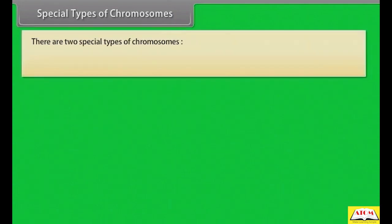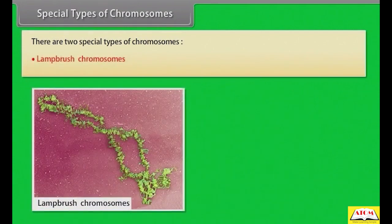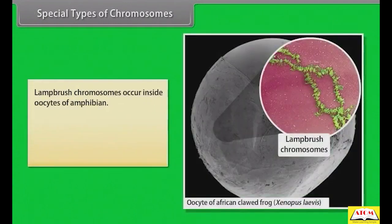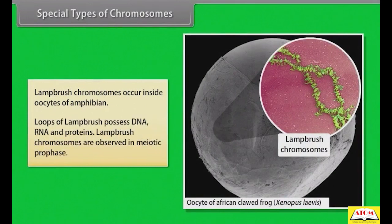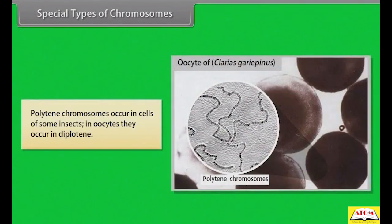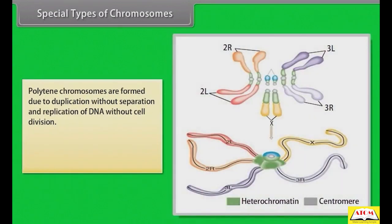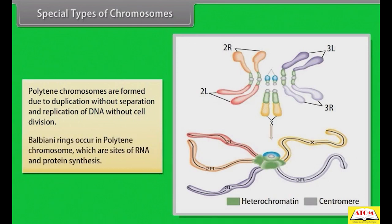There are two special types of chromosomes: lampbrush chromosomes and polytene chromosomes. Lampbrush chromosomes occur inside oocytes of amphibians; loops of lampbrush possess DNA, RNA, and proteins, and are observed in meiotic prophase. Polytene chromosomes occur in cells of some insects; in oocytes they occur in diplotene. Polytene chromosomes are formed due to duplication without separation and replication of DNA without cell division. Balbiani rings occur in polytene chromosomes, which are sites of RNA and protein synthesis.